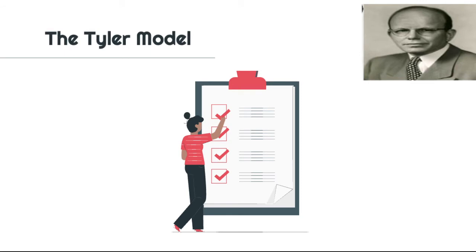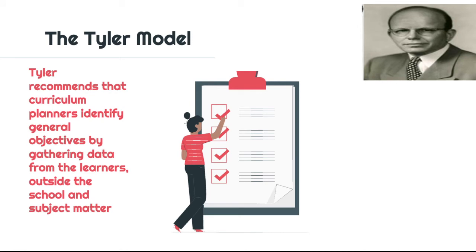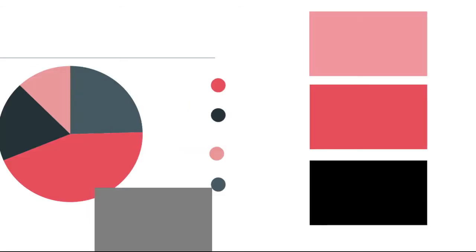The Tyler Model on Curriculum and Instruction recommends that curriculum planners identify general objectives by gathering data from the learners outside the school and subject matter. Ralph Tyler created a book in 1949 entitled Basic Principles of Curriculum and Instruction. The general objectives that successfully pass through the two screens become what are now popularly known as instructional objectives.